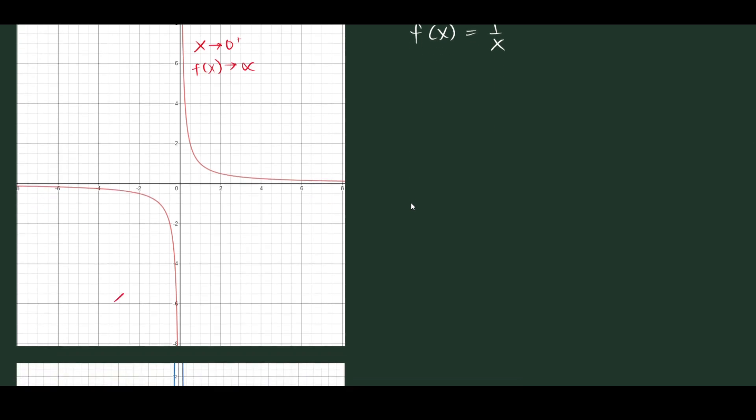So let's take a look at how these most basic rational functions behave. We have here f(x) = 1/x. This is the graph. Let's take a look at what happens as x approaches 0 from the right. f(x) approaches infinity, right? How about on the other side? If x approaches 0 from the left, we can see that f(x) approaches negative infinity.